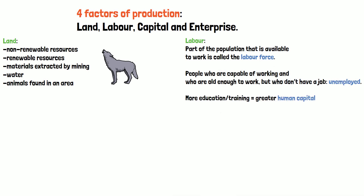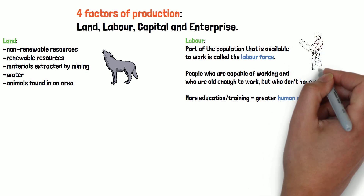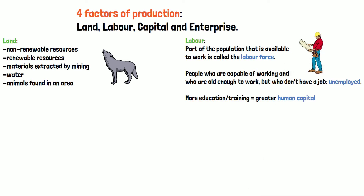Labor is the work done by those people who contribute to the production process. The part of the population that is available to work is called the labor force. There's usually also a number of people who are capable of working and old enough to work, but don't have a job — economists refer to these people as unemployed. There are also people who aren't in paid employment but still provide things people need or want, such as homemakers. Different people can have different levels of education, experience, or training, which can make some people more valuable or productive in the workspace than others — we say that they have a greater amount of human capital.